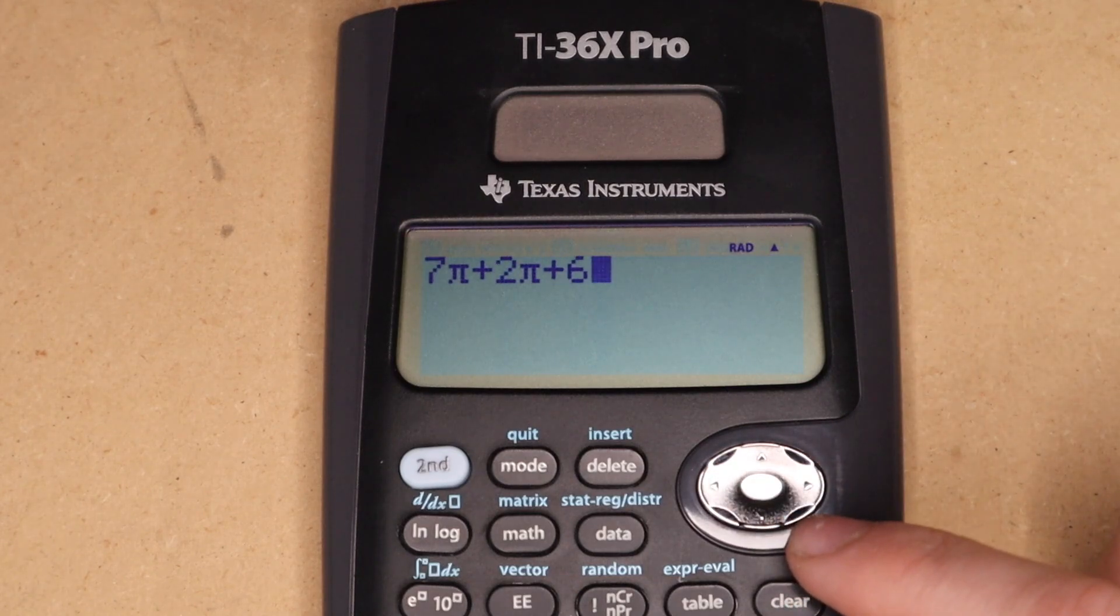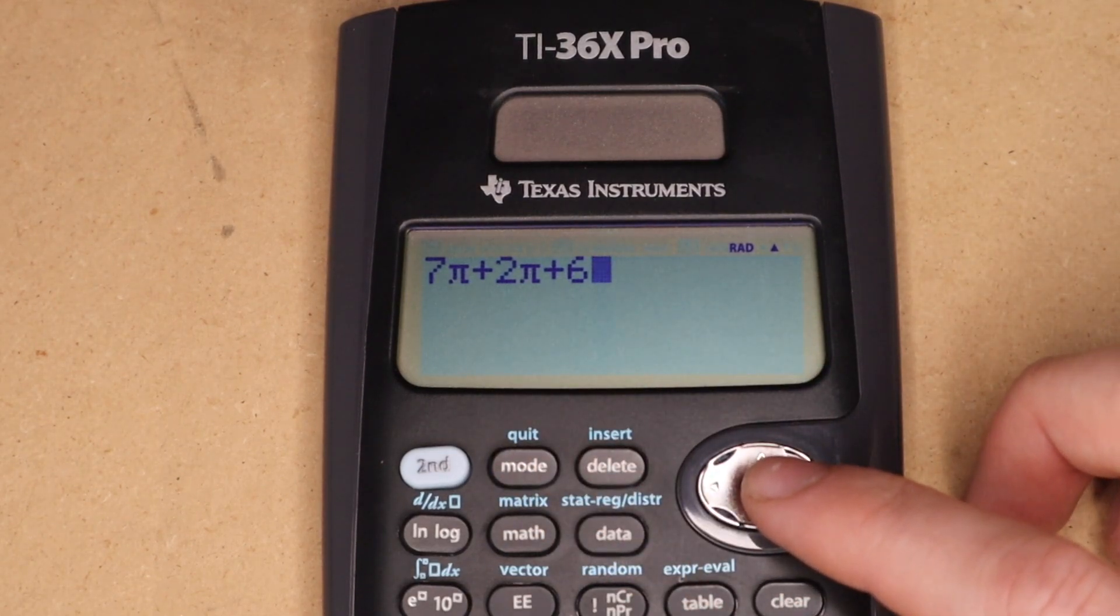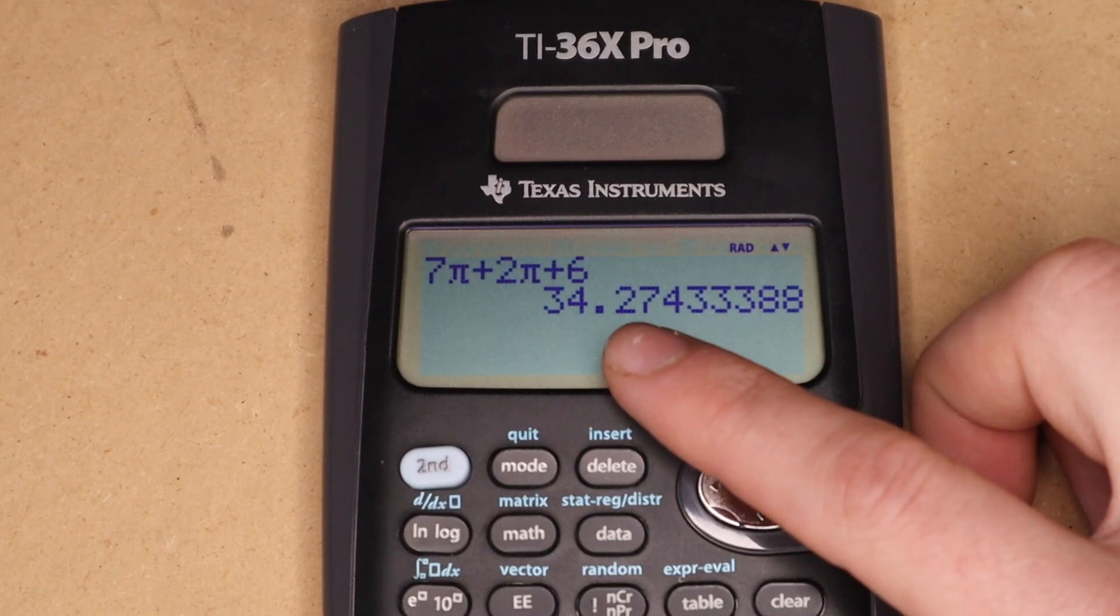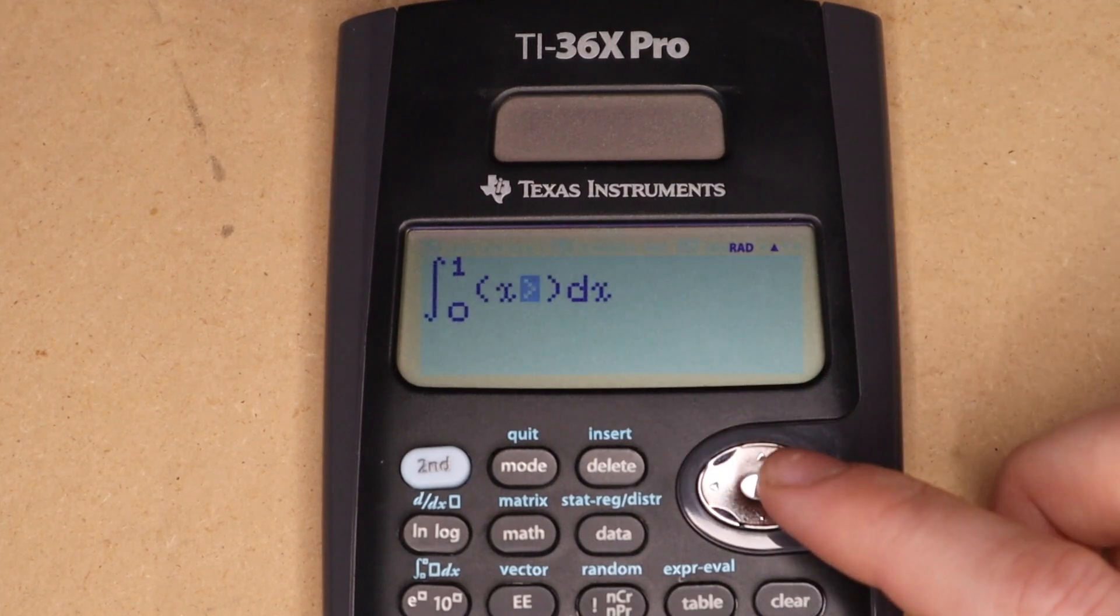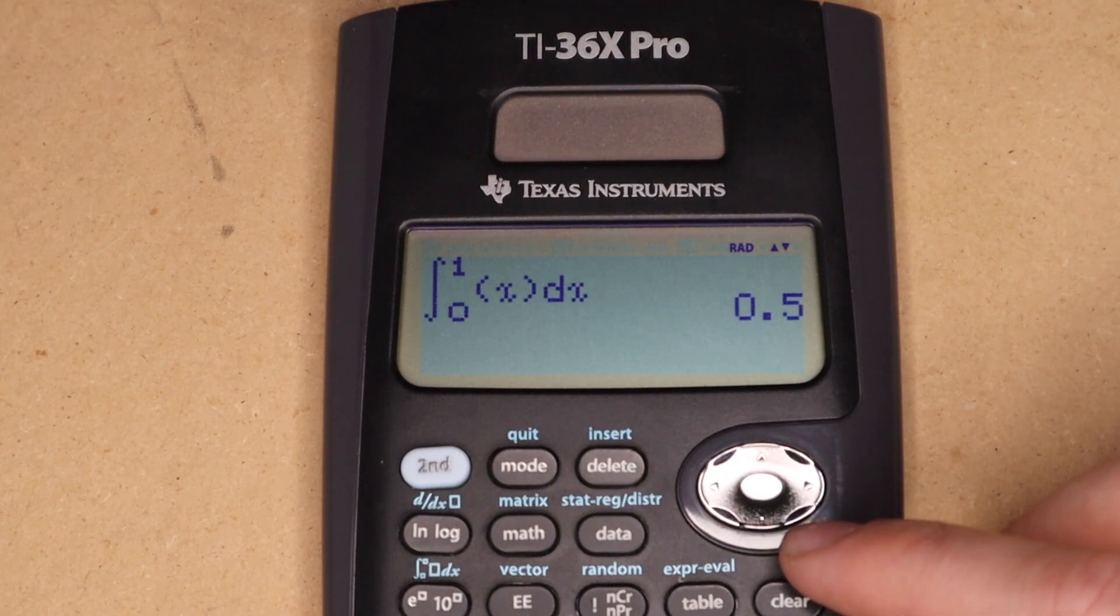But if you start to mix in extra numbers in some cases, like here, this will not give me nine pi plus six, which is the exact form. It will give me a single decimal approximation. And then also any integral, no matter how simple, will give you a decimal answer.